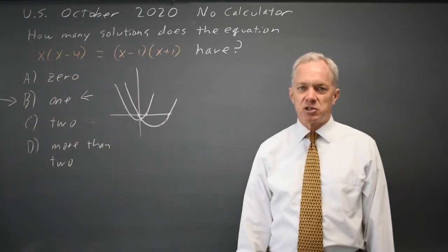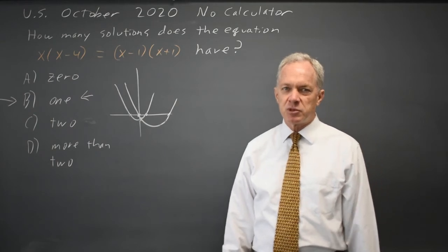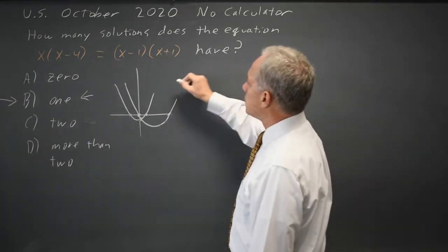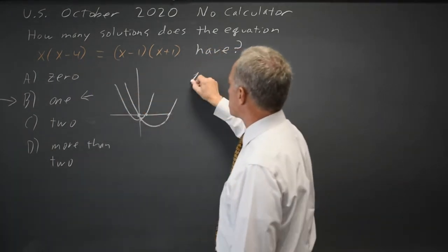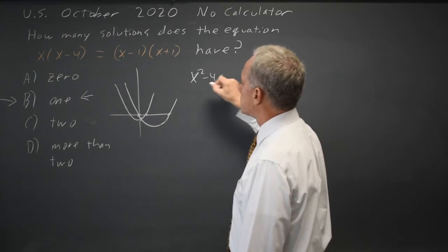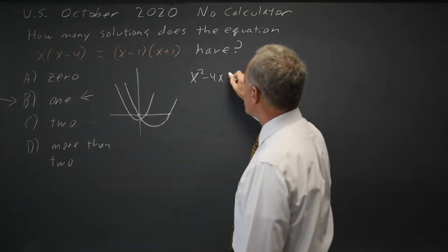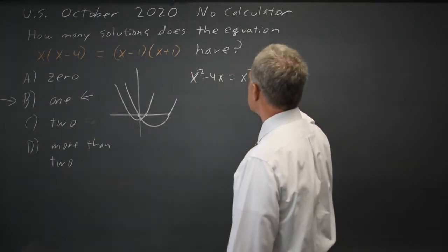If that's not emotionally satisfying, if you have time to do the algebra, x times x minus 4 is x squared minus 4x. x plus 1 times x minus 1 is x squared minus 1.